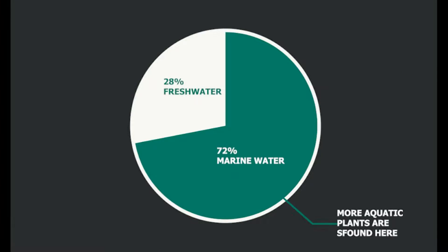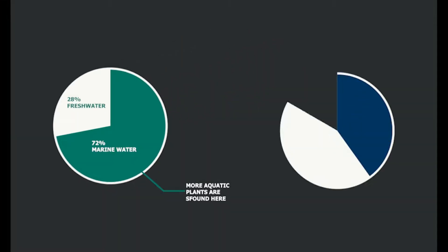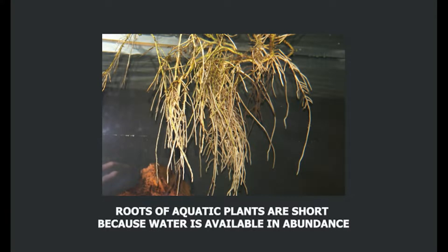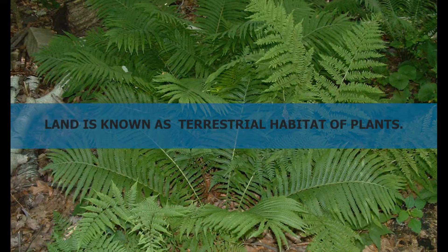A lot of plants are found in aquatic habitats. Around 40 percent of total photosynthesis takes place from aquatic plants, meaning 40 percent of total oxygen comes from water sources. One function of roots is to absorb water from deep in the soil, but in aquatic habitats water is available in abundance, and thus the roots of these plants are generally short.